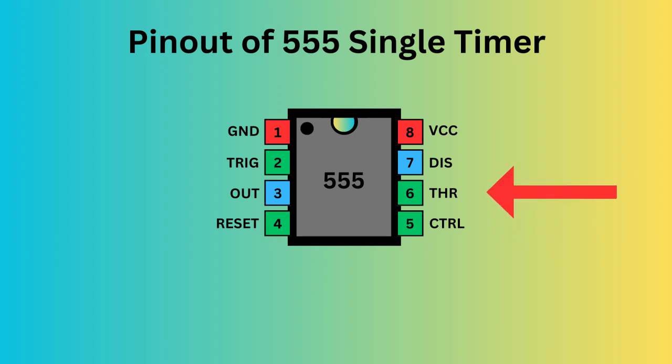Pin 6, the threshold pin, monitors the voltage of the capacitor in the circuit. Pin 7, the discharge pin, manages the timing capacitor's charge and discharge cycle. Pin 8, known as VCC, supplies power to the IC.